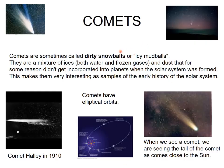Comets are also our neighbors in the solar system. They are sometimes called dirty snowballs or icy mud balls. They are a mixture of ices — both water and frozen gases — and dust that did not get incorporated into a planet when the solar system was formed. Due to the mechanism of solar system formation, they could not combine together like a planet and so remained comets.